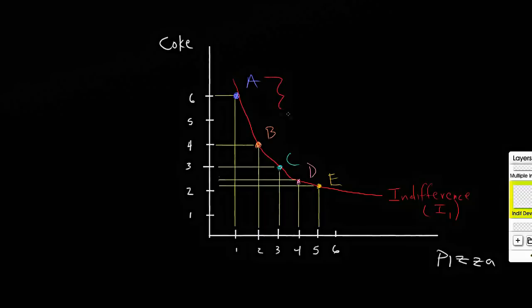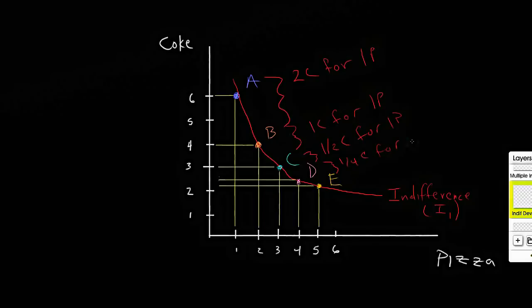And if we analyze the change between each bundle, you'll notice that here at the very top we were willing to exchange two cokes for one piece of pizza, then one coke for one piece of pizza, then one half coke for one piece of pizza, and then lastly one fourth coke for one piece of pizza.